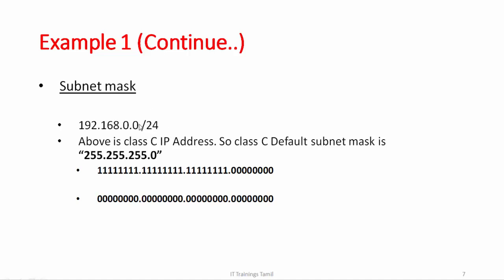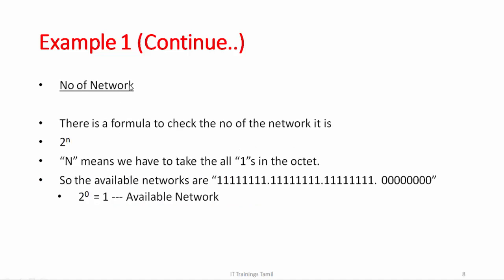Same as /24, it's a subnet mask. This is classful. Classless we will divide — that will be in the next video. So Class C default subnet mask: 255.255.255.0 — that is the CIDR value. The subnet mask is divided.